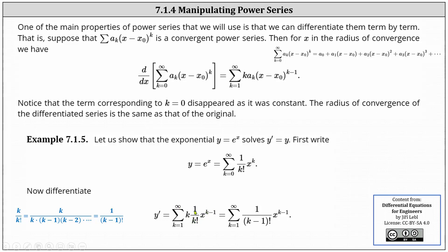We can simplify k divided by k factorial, which is shown in blue on the left. Expanding k factorial, we have k times k minus one times k minus two, and so on. Notice that k simplifies to one, giving us one over the quantity k minus one factorial. Therefore, y prime is equal to the sum from k equals one to infinity of one divided by the quantity k minus one factorial times x to the power of k minus one.